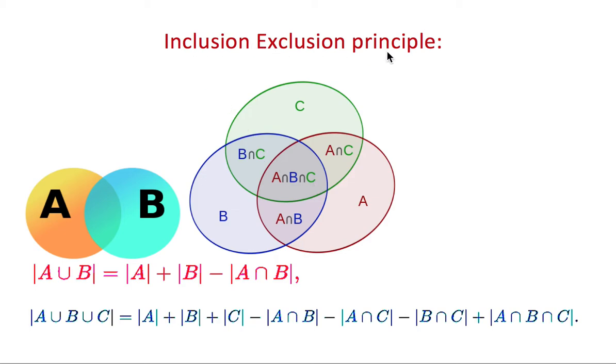Looking at the Inclusion Exclusion Principle. This principle states that the size of A union B—that is, the whole of these two circles, the union of these two sets—